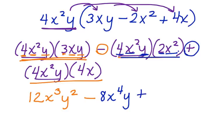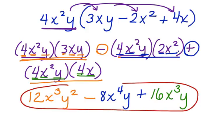Bring down the plus. And we have 4x squared y times 4x. 4 times 4 is 16. x squared times x is x to the third. Bring down the y. Our final answer is 12x cubed y squared minus 8x to the fourth y plus 16x cubed y.